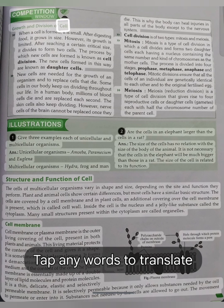Growth and division of cell. When a cell is formed, it is small. After digesting food, it grows in size. However, its growth is limited. After reaching a certain critical size, it divides to form two cells. The process by which new cells are formed is known as cell division. The new cells formed in this way are known as daughter cells. New cells are needed for the growth of an organism and to replace cells that die. Some cells in our body keep on dividing throughout our life. In a human body, millions of blood cells die and are replaced each second. The skin cells also keep dividing.